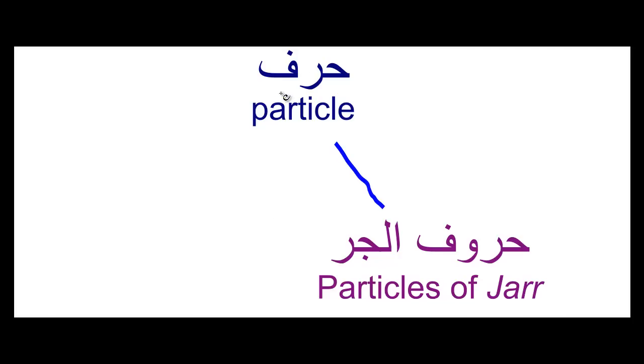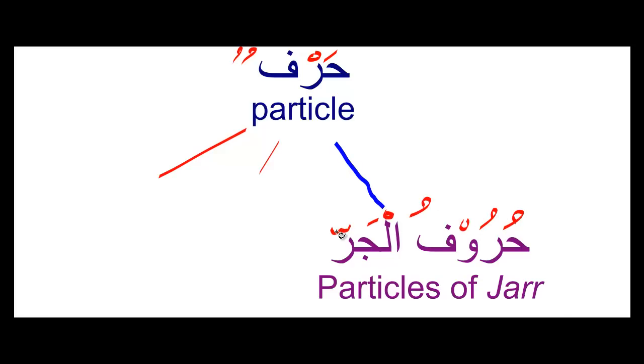Up until now we've been talking about the ism, which is one of the three types of kalima. Today we're going to talk about one of the other types of kalima, which if you remember is harf. Now harf has many different types but the main type we're going to be talking about today is huroof al-jar.